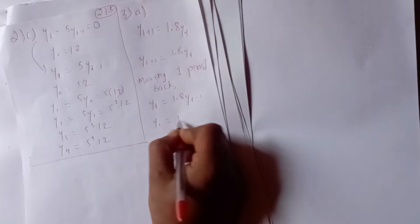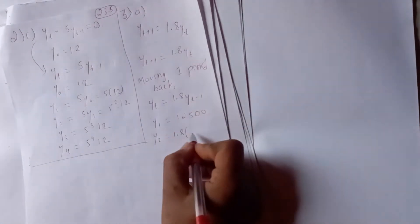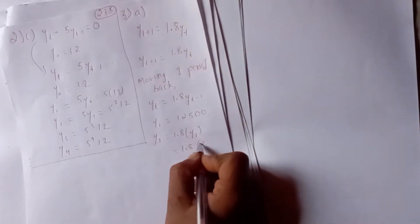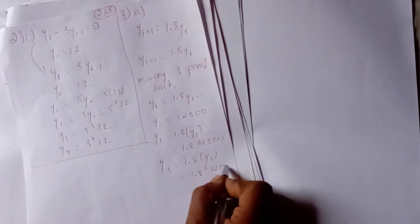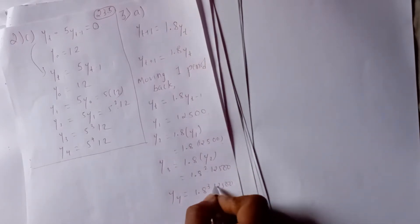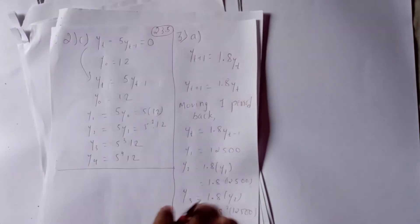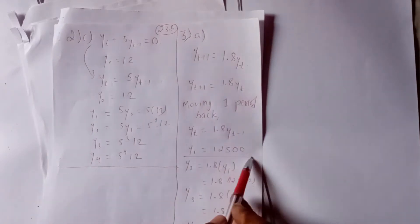The income for year 1 is 12,500. So the income for year 1 is y1 equals 12,500.